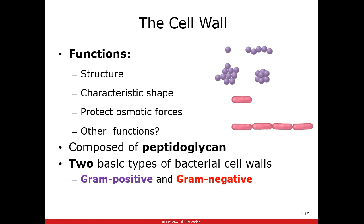Gram positive cell walls are very thick — a super fortified wall. Gram negative bacteria have a very thin wall. This helps us determine what kind of bacteria it is. There is a staining procedure — the gram stain — that will show bacteria as purple if they have that thick cell wall, and as pink if they have that thin cell wall.